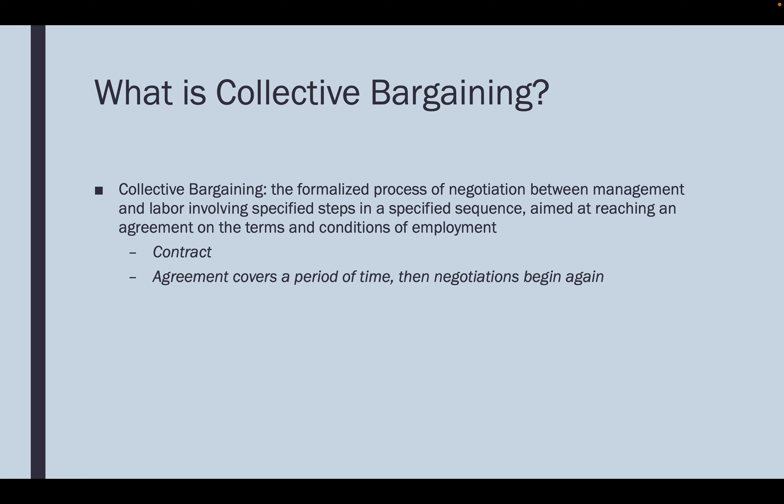Collective bargaining is a process of negotiations between management and labor with the intent of reaching a negotiated agreement. The result is a contract, or what we call a collective bargaining agreement, or CBA for short. Agreements usually cover a period of time — typically three years is pretty standard for a collective bargaining agreement.